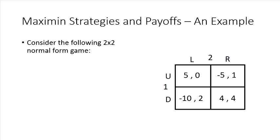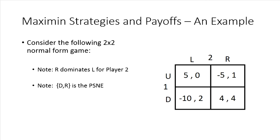We're going to jump right into an example. We're going to look at the following two-by-two normal form game and solve for the Maximin strategy and payoff for player one. We'll leave player two as an exercise, which turns out to be a much simpler case, because if you carefully observe this game, for player two R is a strictly dominant strategy, and the Nash equilibrium of this static game is to play Down-Right for the entire profile across both players.